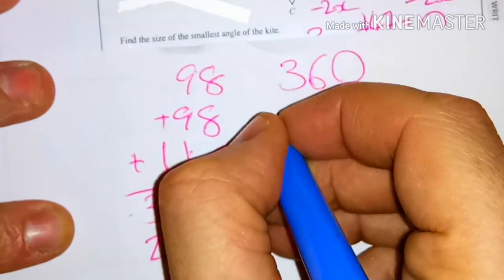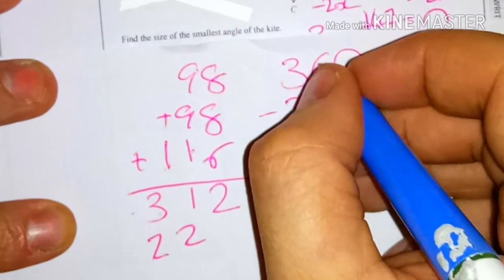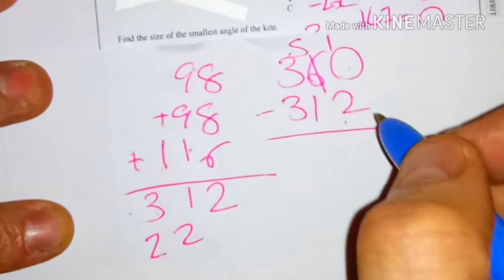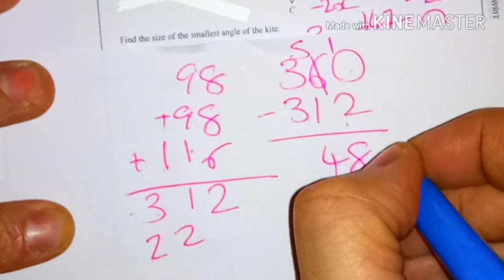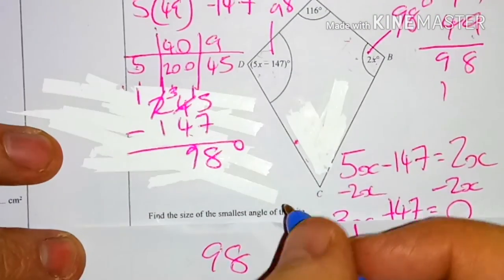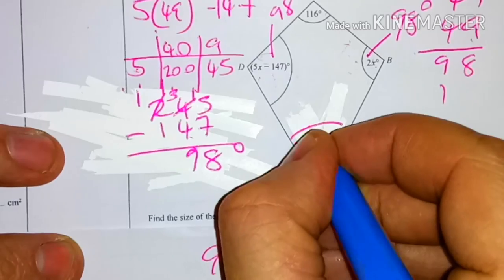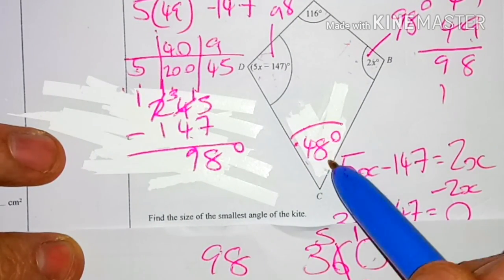So I have to do 360 minus 312. 0 minus 2 I can't do, so I need to borrow: 10 minus 2 is 8. 5 minus 1 is 4. 3 minus 3 is 0. So it's 48 degrees. This one here is 48 degrees. That's your smallest angle, so that's your answer: 48 degrees.